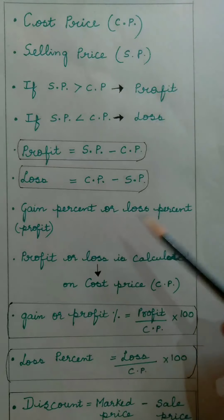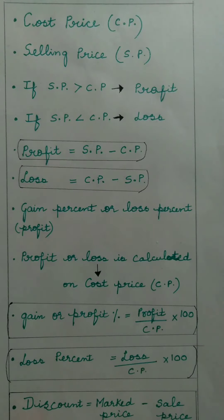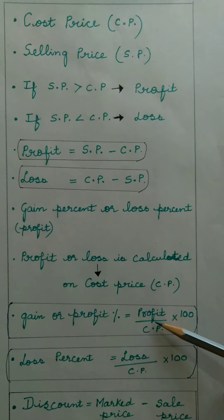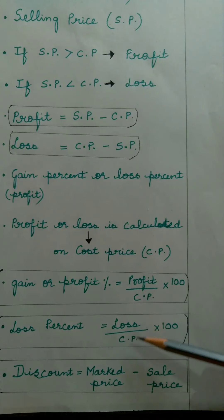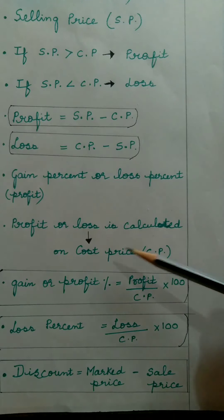The next topic is gain percent or loss percent. Gain is also called profit. Gain or profit or loss on rupees 100 is called gain percent or loss percent. The gain or profit percentage is calculated as: profit divided by cost price, multiplied by 100. Loss percent is calculated using the formula: loss divided by cost price, multiplied by 100. Both profit percent and loss percent are calculated on the basis of cost price.